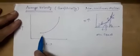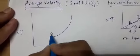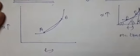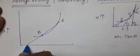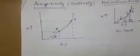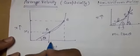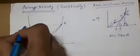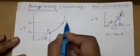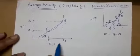Using this concept, while explaining the graphical representation for non-uniform motion, let us consider two points A and B on this curve. Join these two points with a chord — a straight line. Let us produce this line meeting the time axis at an angle theta. Corresponding to point A, position is x1 and time is t1; for point B, position is x2 and time is t2.